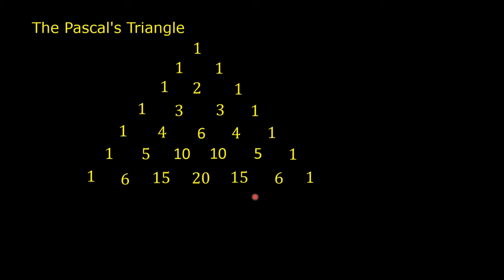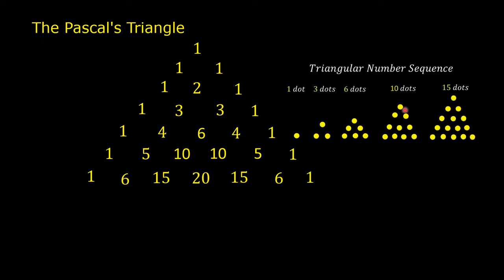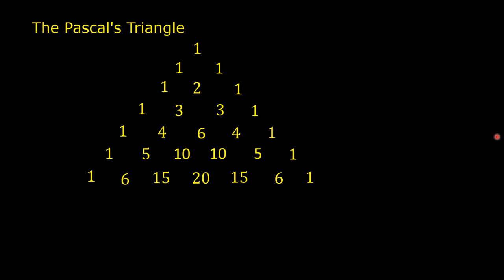The next diagonal contains the triangular number sequence: 1, 3, 6, 10, 15. These can be visualized as dot arrangements — 1 dot, 3 dots, 6 dots, 10 dots, 15 dots.